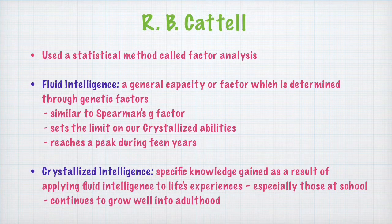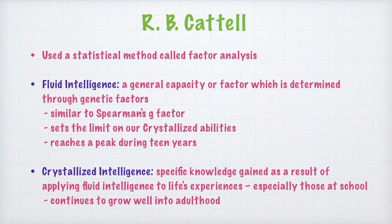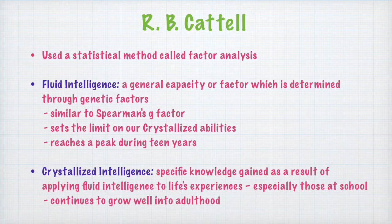Fluid intelligence reaches a peak during the teen years and is more or less governed by genetic factors — so it is genetically given. Crystallized intelligence, on the other hand, refers to specific knowledge acquired through the application of fluid intelligence in life. According to Cattell, crystallized intelligence continues to grow well into adulthood, whereas fluid intelligence reaches a peak during teen years beyond which it does not grow further.